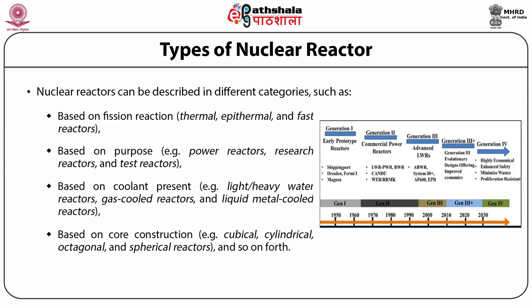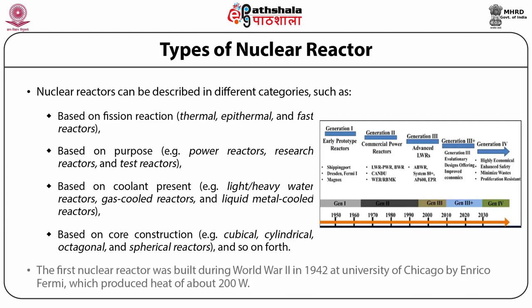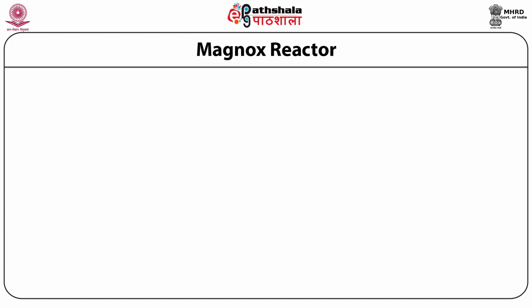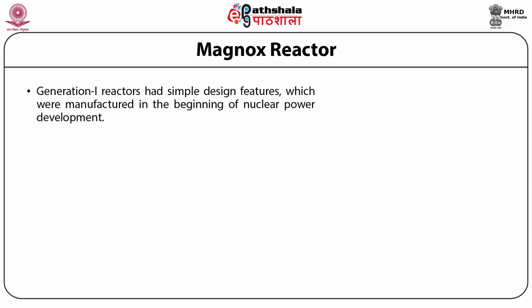The various generations of nuclear reactors are shown in this figure. The first nuclear reactor was built during the Second World War in 1942 at the University of Chicago by Enrico Fermi, which produced heat of about 200 watts. This was a thermal reactor where uranium dioxide and graphite were used as nuclear fuel and moderator materials; however, no coolant and shielding materials were used in that reactor. Generation 1 reactors had simple design features and were manufactured in the beginning of nuclear power development.